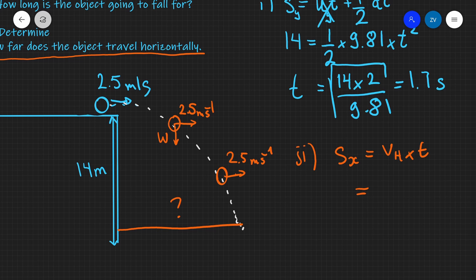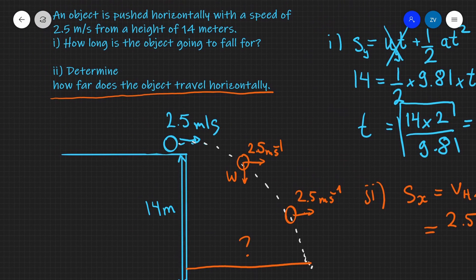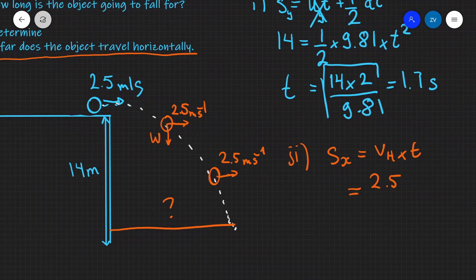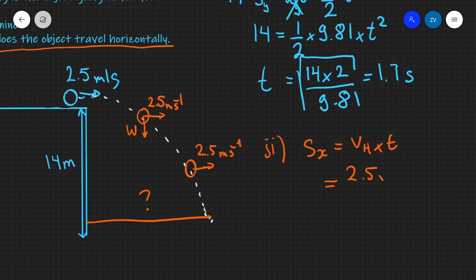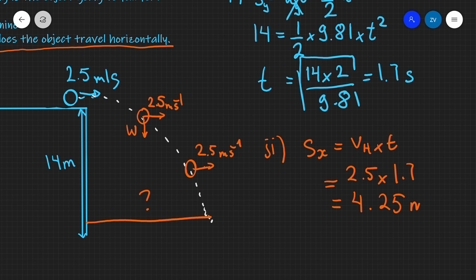So our horizontal velocity is two and a half meters per second. Let's just double check that. Yep, two and a half meters per second and our time of flight which we have just worked out is 1.7 seconds. And if we multiply those two out we're going to get a horizontal distance of 4.25 meters.